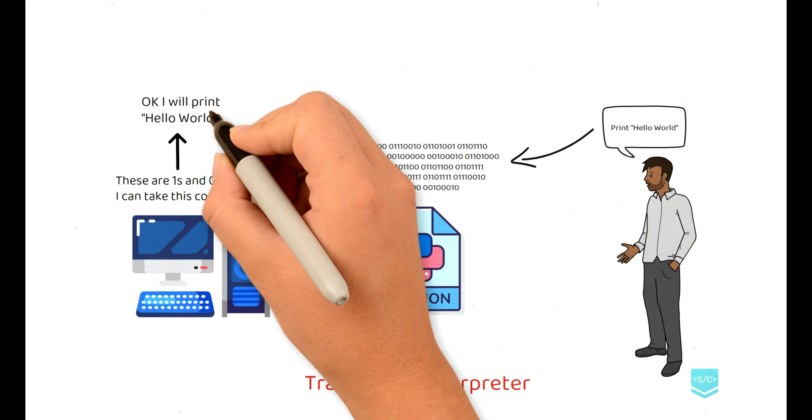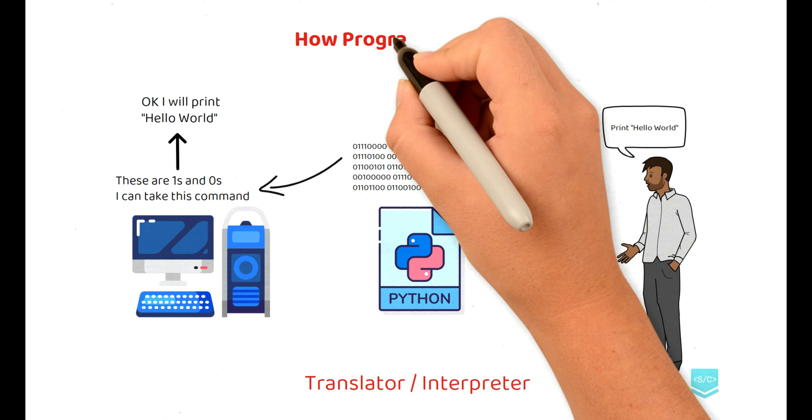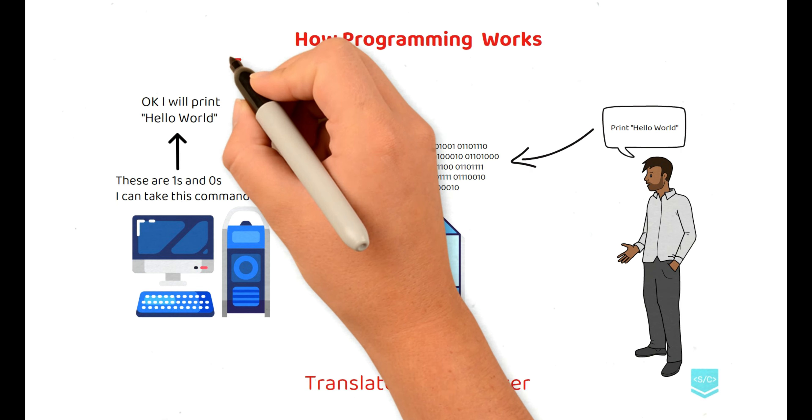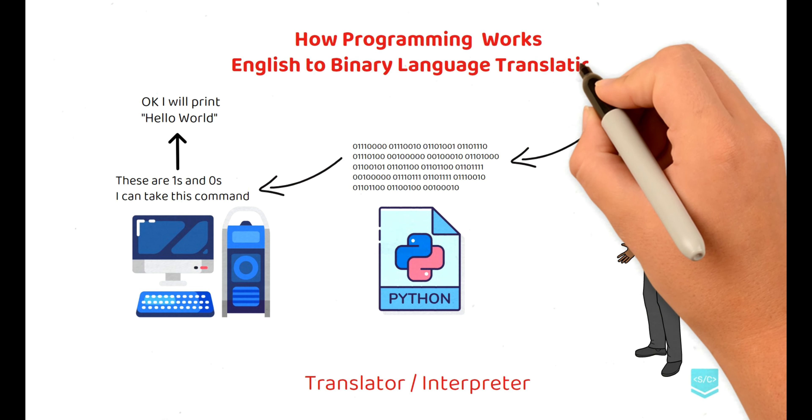This is how programming works. You write your code in English and every programming language has an interpreter that will take the English language, convert it into the binary language which is ones and zeros and give it to the computer. The computer will do what you want it to do. That is the overview of programming. That is how coding works. You write code in English, it gets translated into ones and zeros and the computer does what you want.